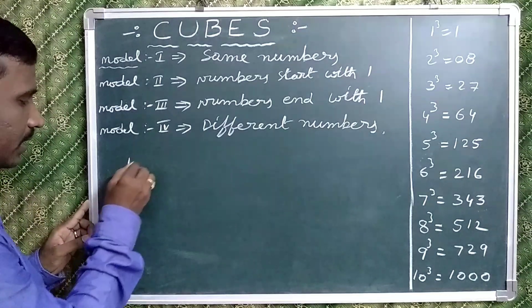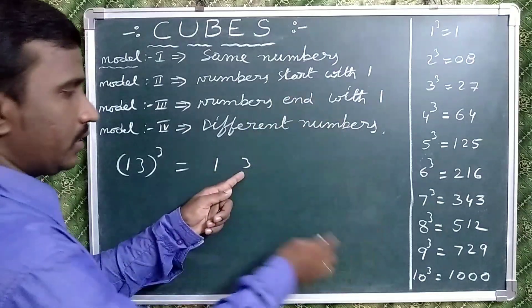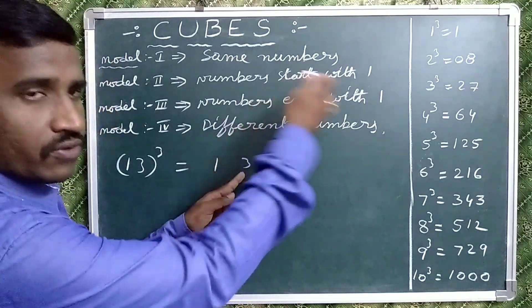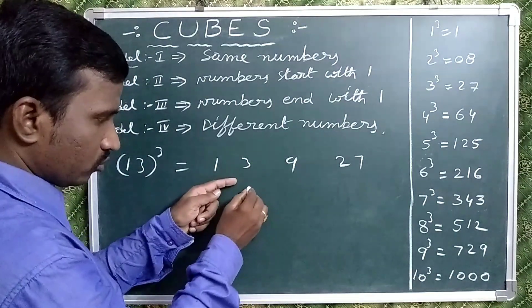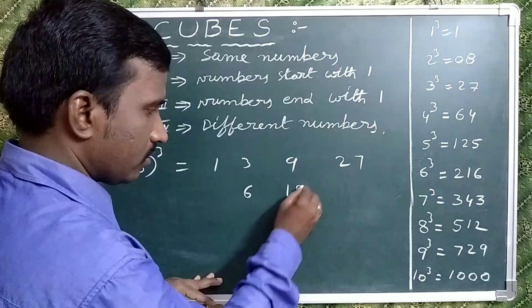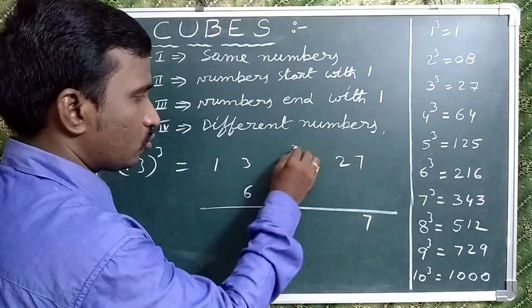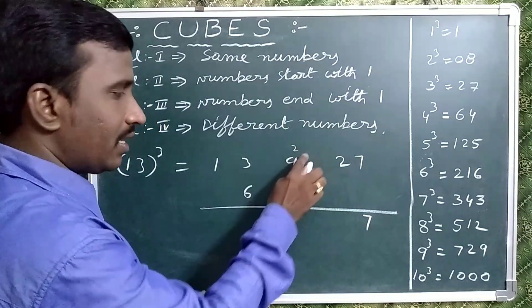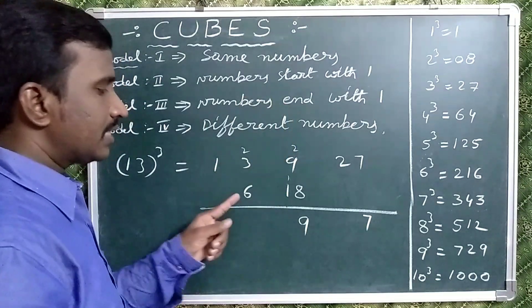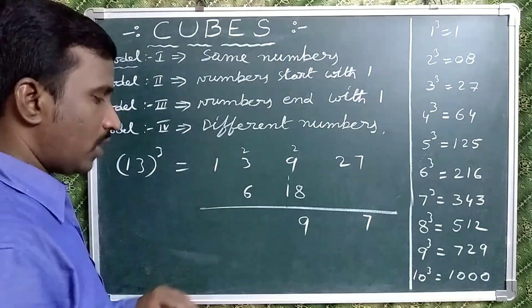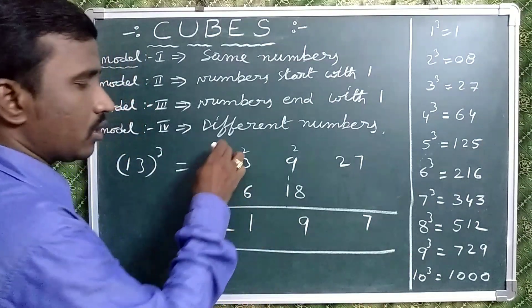Now observe 13 cube. Write 1, 3. Square of 3 is 9. Cube of 3 is 27. Double of the middle numbers: 3 times 2 is 6, 9 times 2 is 18. Now add: write 7, carry 2. 8 plus 2 is 10, plus 9 is 19 — write 9, carry 1. 1 plus 1 is 2; write 2. 6 plus 3 is 9, plus 2 is 11 — write 1, carry 1. 1 plus 1 is 2. That is why 2197 is the 13 cube.